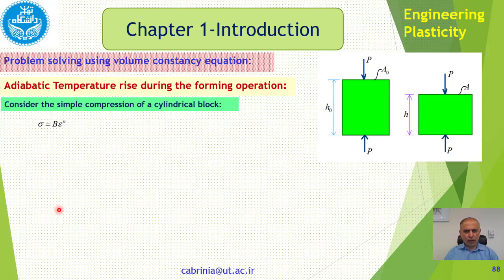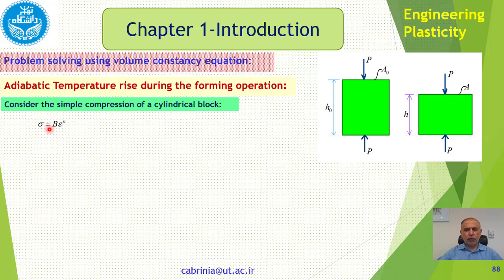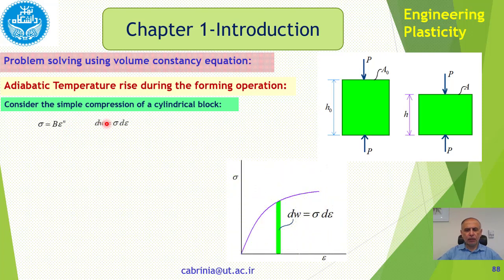Consider a simple operation like compression of a cylindrical block. We have a cylinder with initial area A0 and initial height H0, and we are going to compress it with pressure P to a final cross-section area A and shorten it to a length H. For this operation, the material obeys the relation sigma equals B times epsilon to the power of n. This is the governing equation.